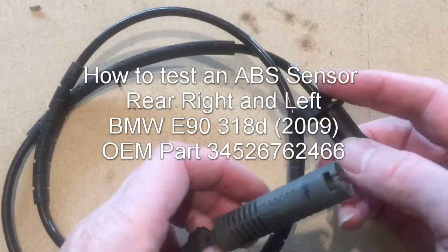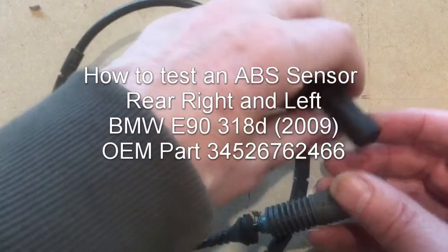This video shows how to test the rear ABS wheel sensor on an E90 318D 2009, part number 6762466.